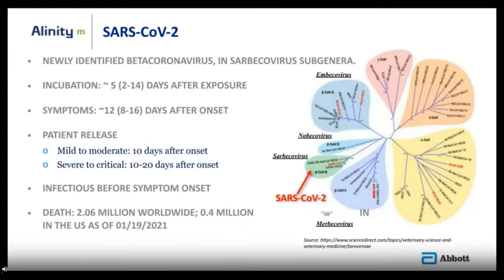SARS-CoV-2 is a newly identified beta-coronavirus in the Sarbecovirus subgenus. The incubation time is approximately five days after exposure, and symptoms last for 12 days after onset. Patients with mild to moderate symptoms are typically released 10 days after onset; those with severe to critical conditions are released 10 to 20 days after onset. Patients who are infected can be infectious before symptom onset. As of January 19, 2021, SARS-CoV-2 has led to 2 million deaths worldwide and 0.4 million deaths in the United States.